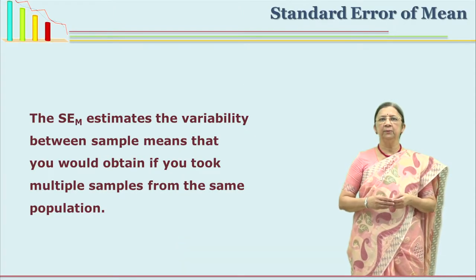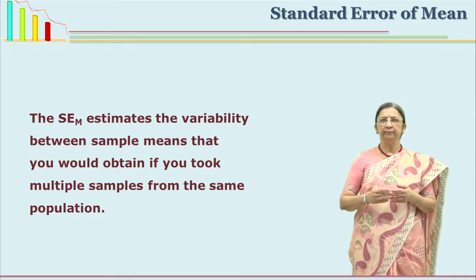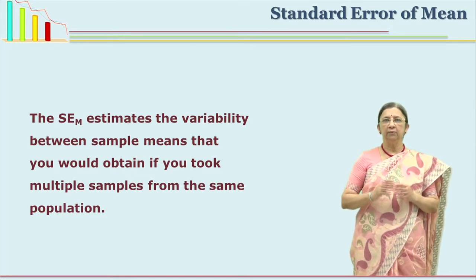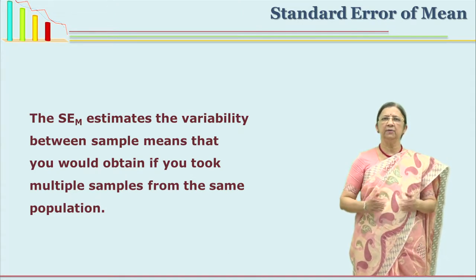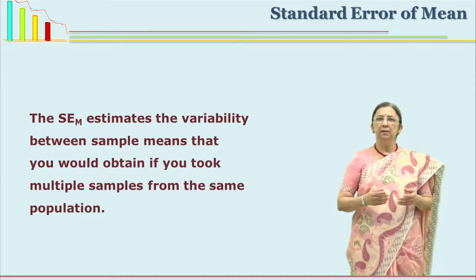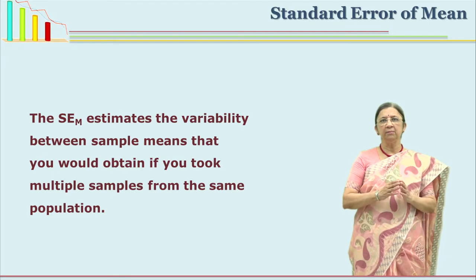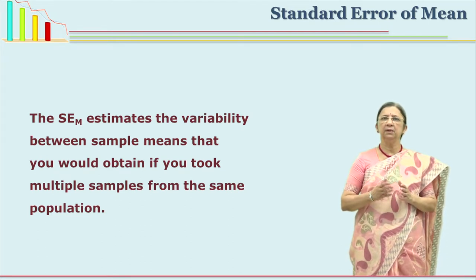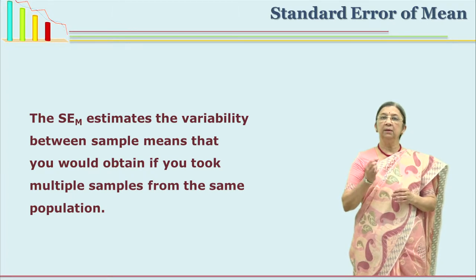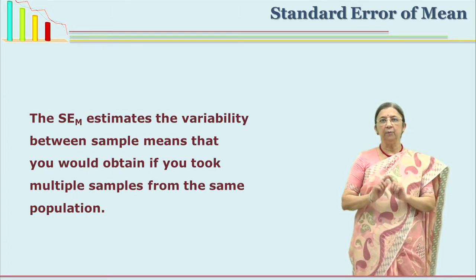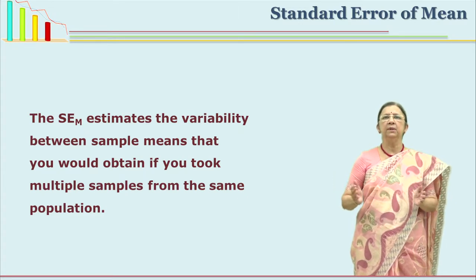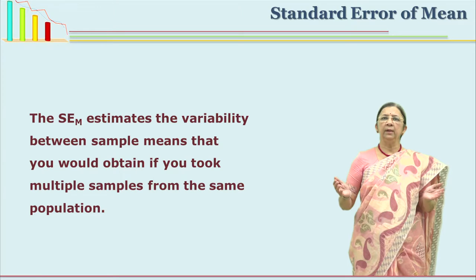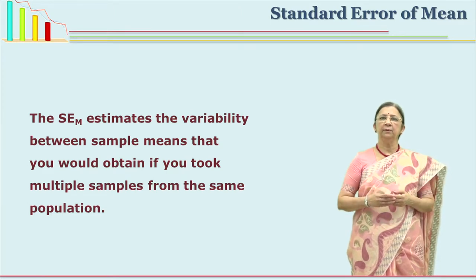The standard error of mean helps you estimate the variability from the population mean. If you take 100 representative samples from the population, you will have 100 means. They are not expected to be the same because there will be a small variation. This variation from the population mean is given by the standard error of mean. It tells you how the sample means differ, how they are varied, and how far they are from the population mean.